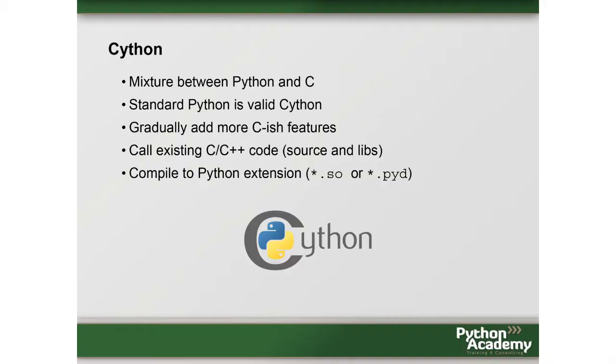The first thing I want to introduce you to is Cython. We saw it already; I just want to go in a bit more detail. It's a mixture between Python and C — a very nice mixture. If you have normal Python, you just compile it to Cython, you have to change a single line, and you get the extension module. Stefan Behnel is one of the core developers, and Mark Florisson is also here — he also worked on Cython.